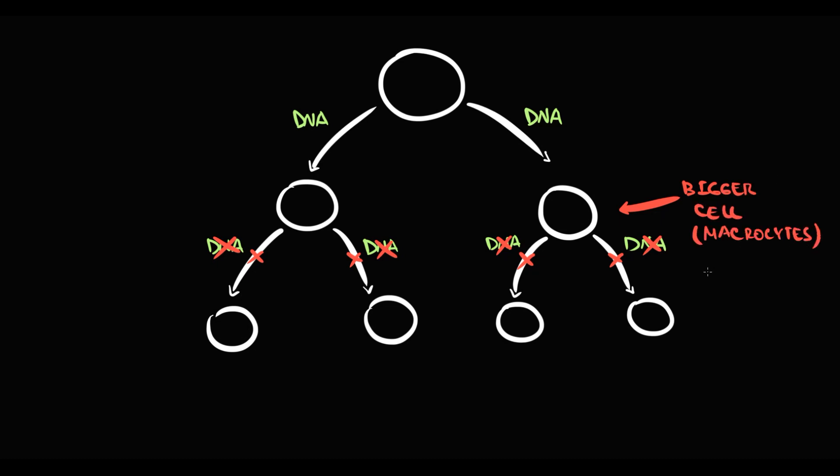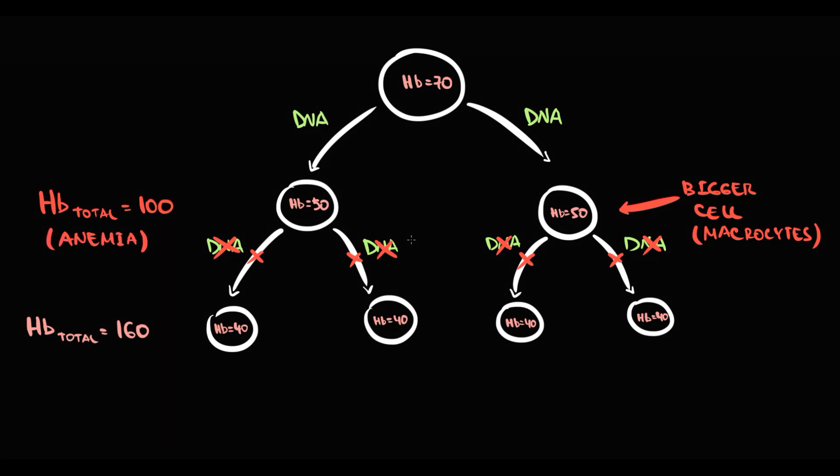Now, in one big cell, hemoglobin concentration, let's say 70. In smaller cells, hemoglobin concentration is 50. And in most mature cells, hemoglobin concentration is 40. So total hemoglobin in most mature cells will be 160. In less mature cells, total hemoglobin level will be 100, which is anemia. So with lesser cellular divisions, red blood cells inside them have bigger amount of hemoglobin, but their quantity is too small. Thereby, total hemoglobin concentration will be low.